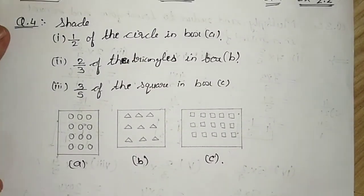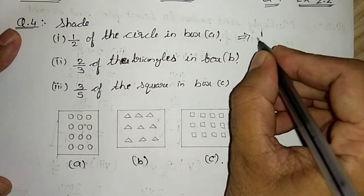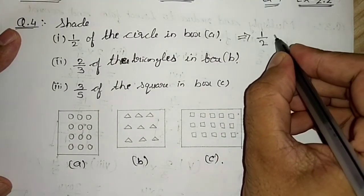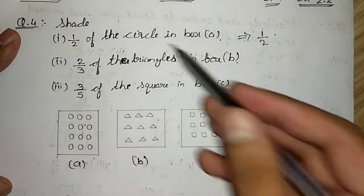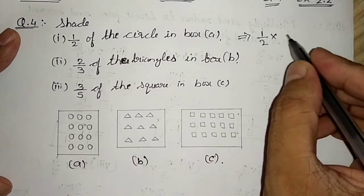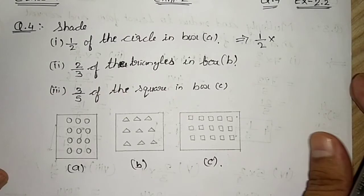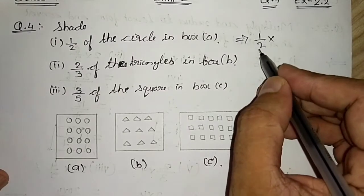They told us that 1 by 2 of, wherever it is given 'of' you have to take the property as multiplication because it is property of maths. 'Of' means multiplication in maths. That is half of the circles in box A.